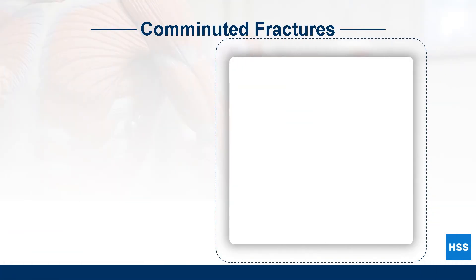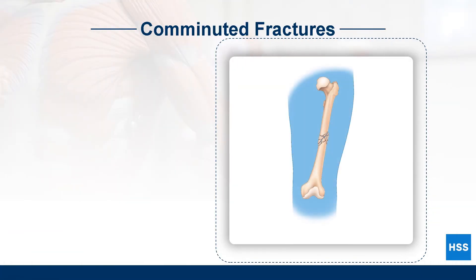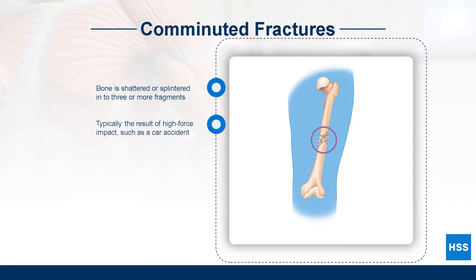A comminuted fracture is a more severe type of fracture resulting in the bone being shattered or splintered into three or more fragments. A comminuted fracture may take longer to heal depending on the number and size of the bone fragments. Comminuted fractures are typically the result of a high force impact, such as a car accident.